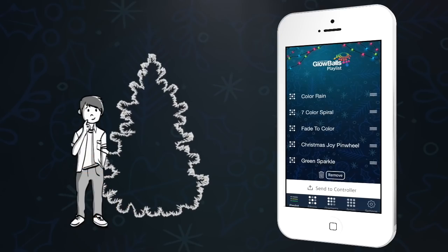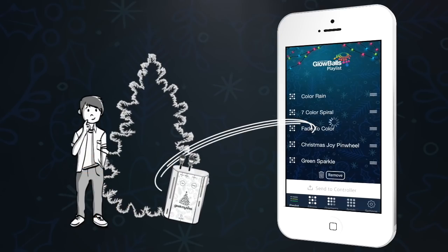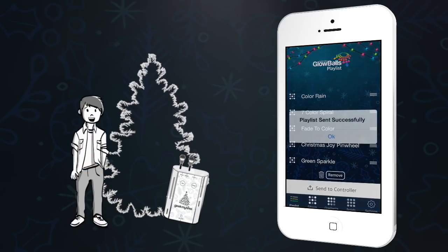When you are ready to see all of your favorite effects on the tree, tap the Send to Controller button. The new playlist and any effects that are not currently on the controller are loaded.